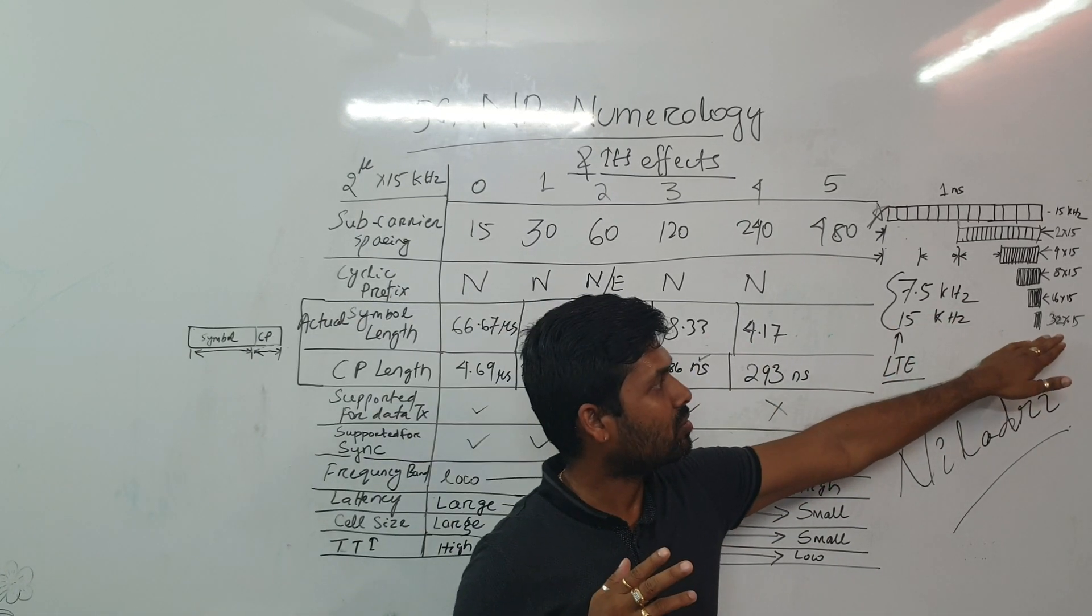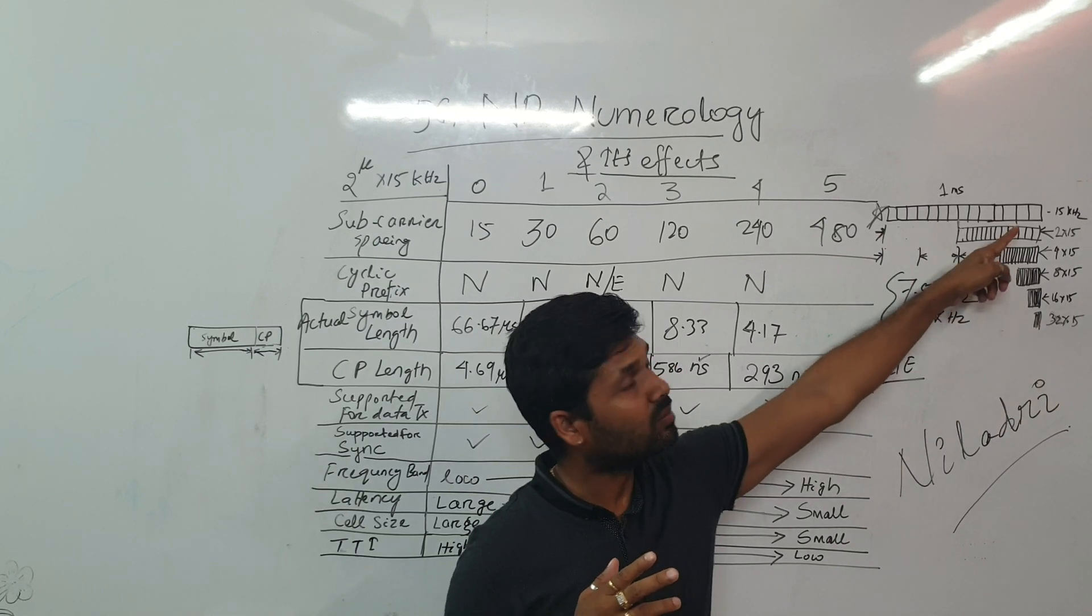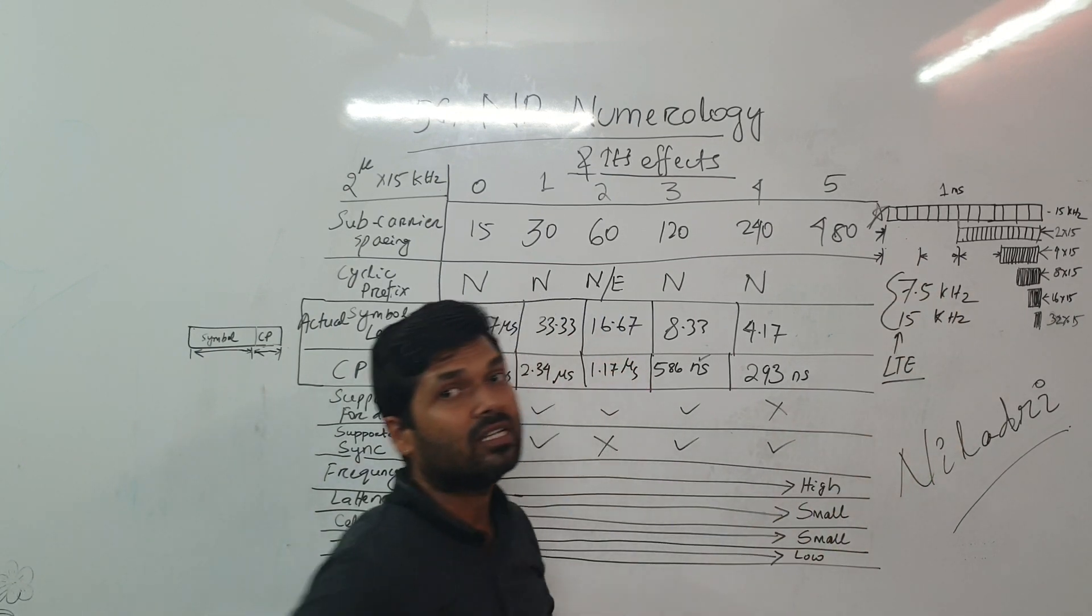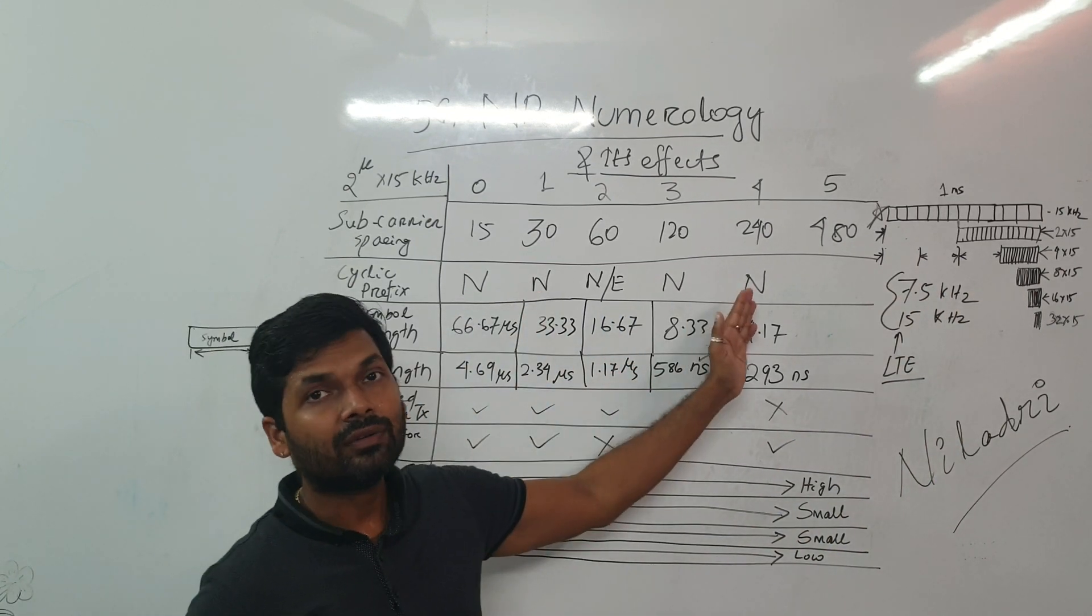Number of, sorry, it's not 15, 32 into number of symbol is 14. So 32 into 14 number of symbols in the same time, 1 millisecond.